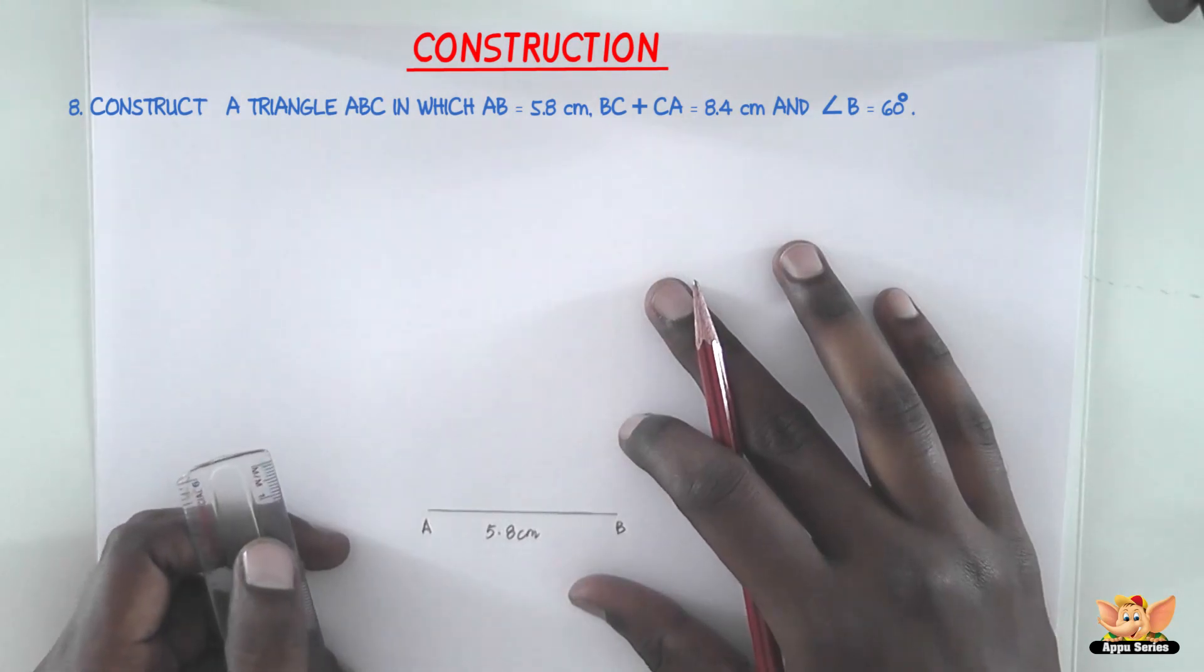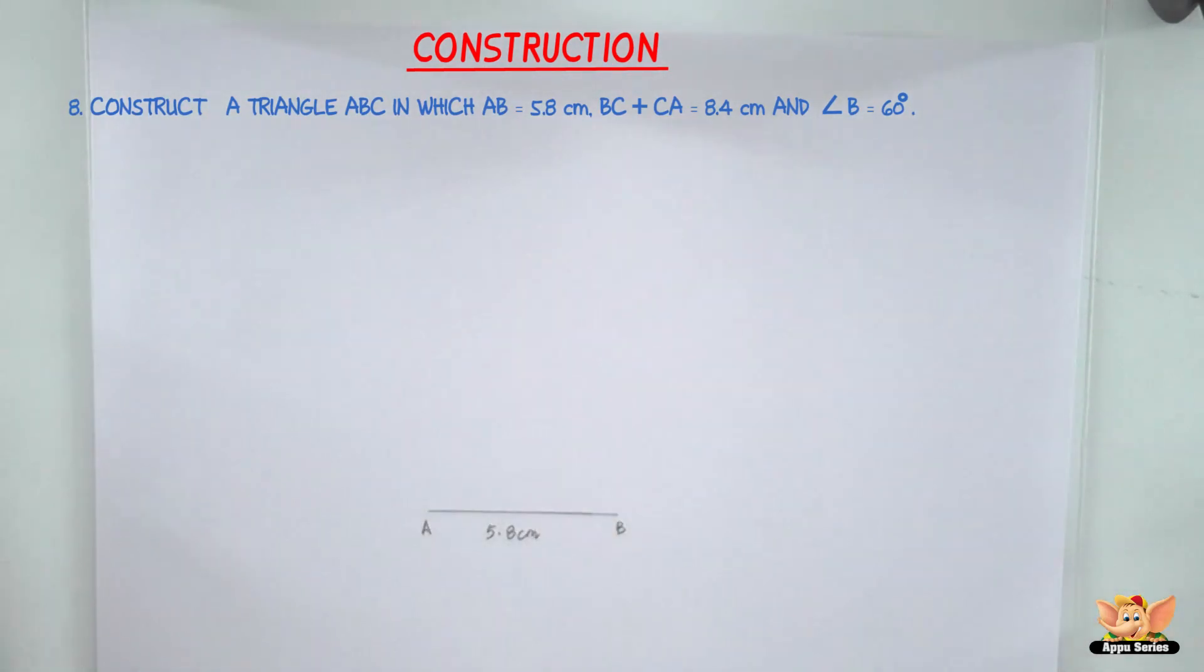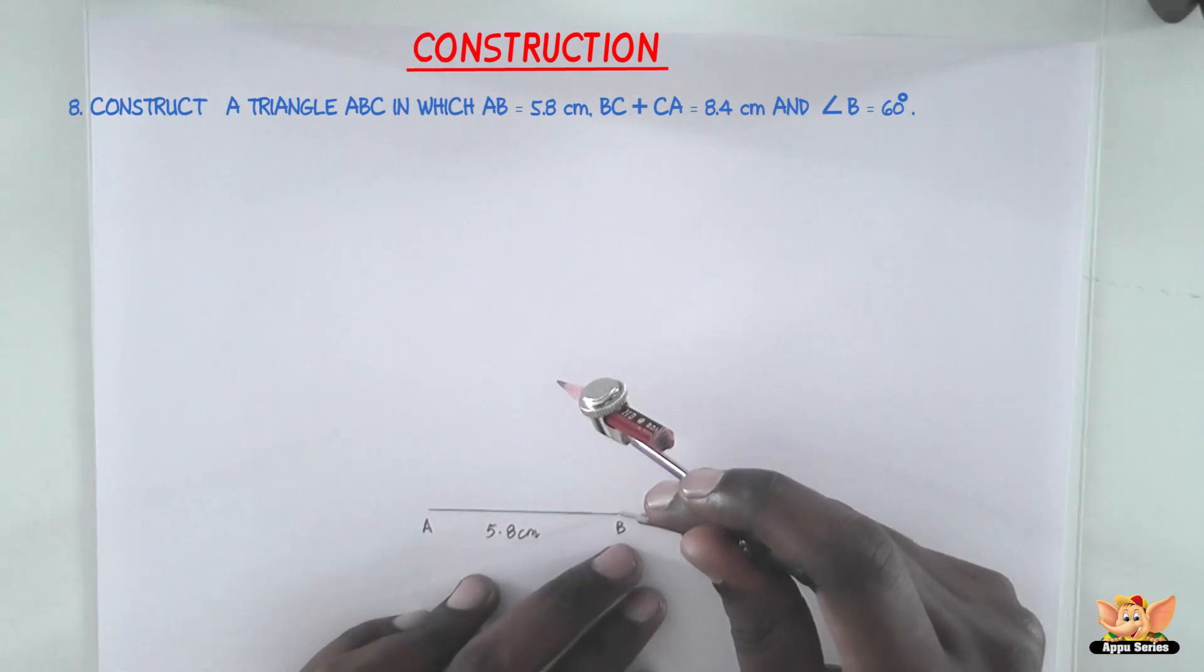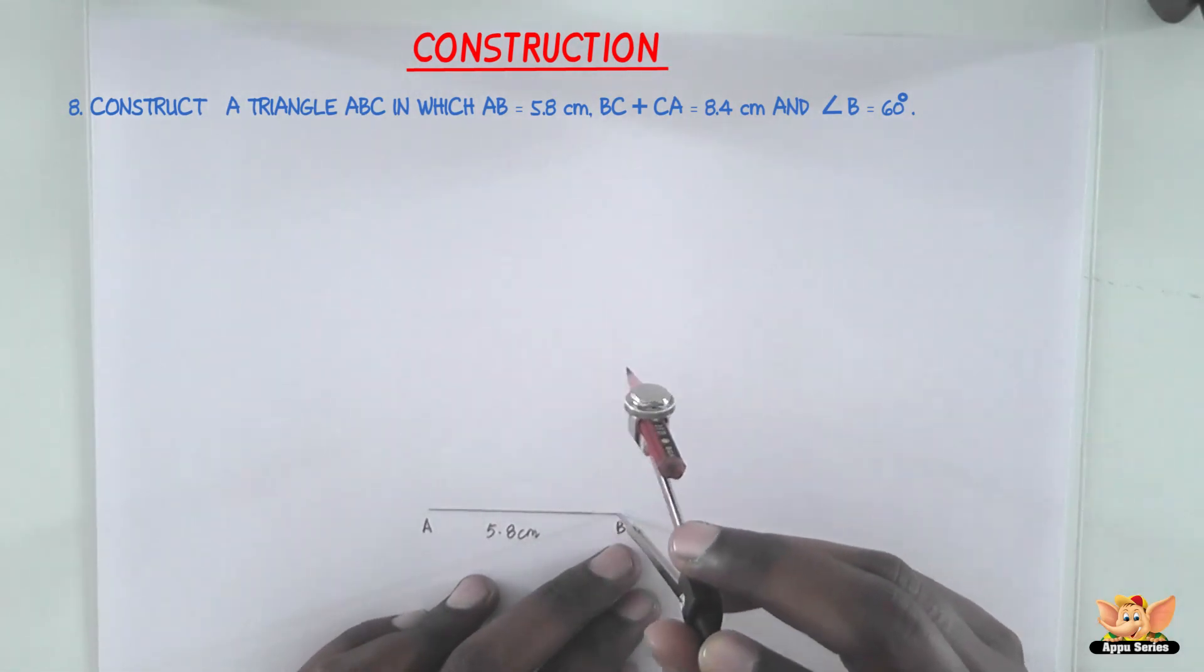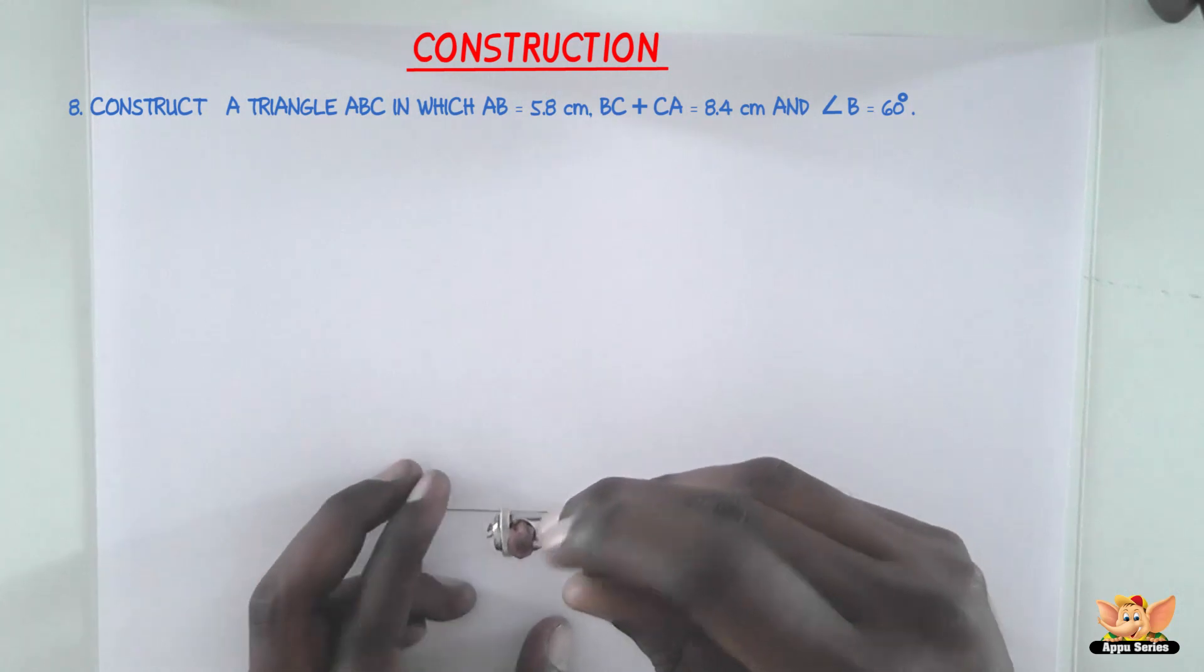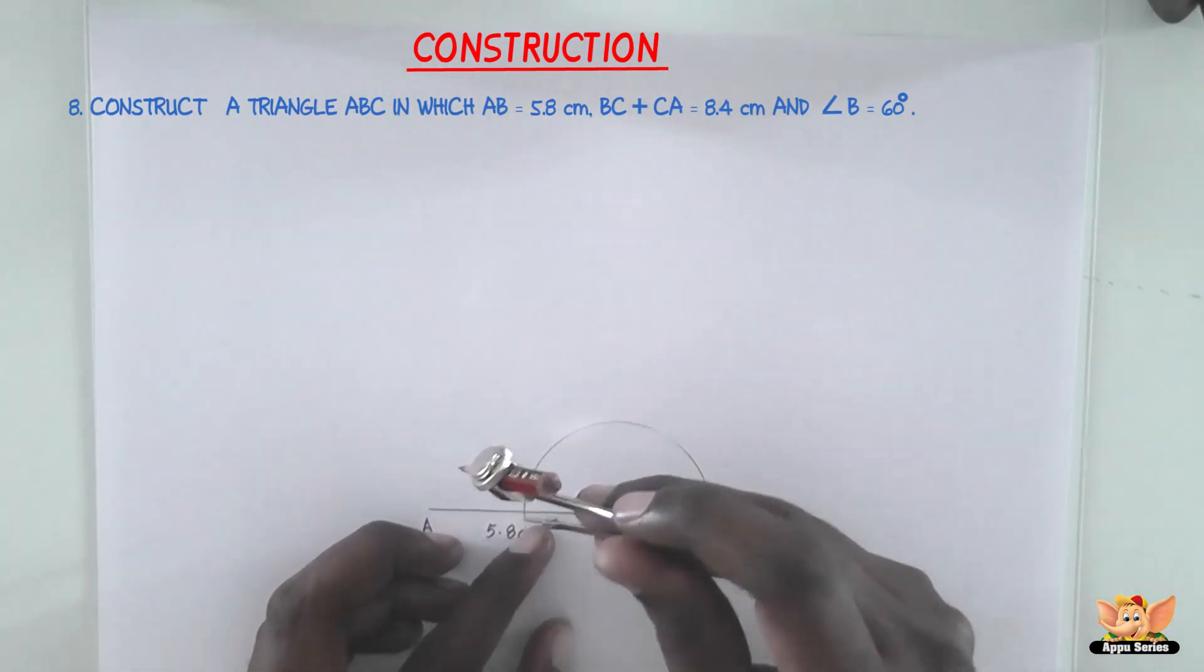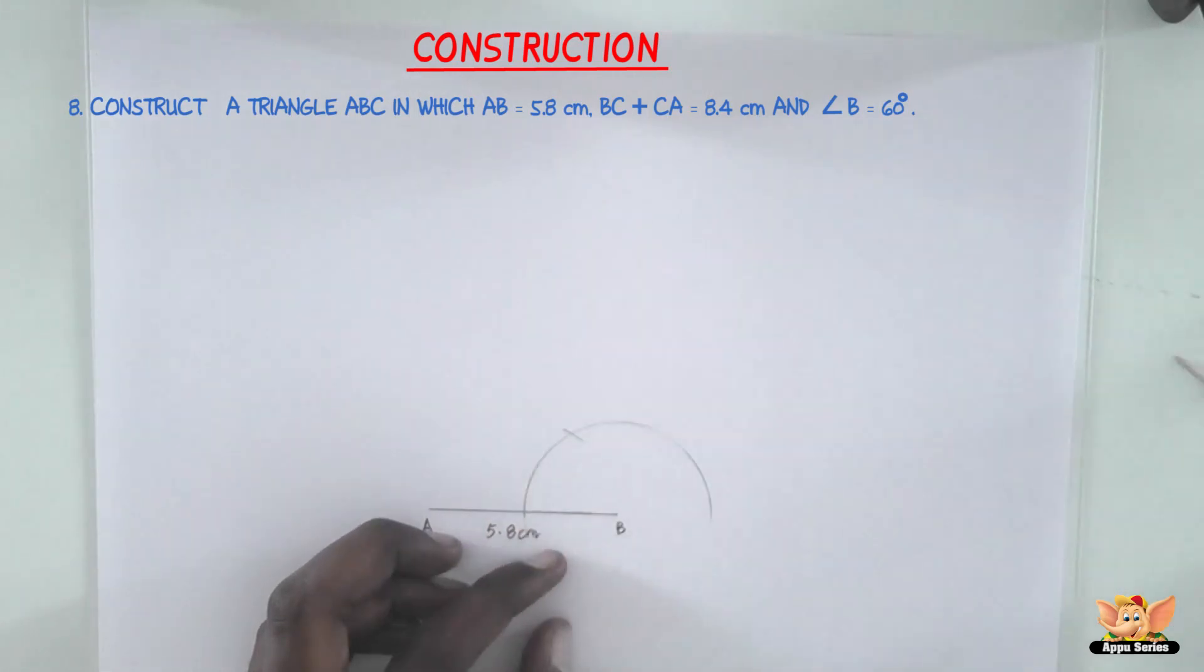The next step is to draw the base angle ABX, which is 60 degrees. Remember, we are going to construct this using only a ruler and compass. Taking B as center and any convenient radius, draw an arc to construct a 60-degree angle. Keeping the compass at this point, cut an arc.